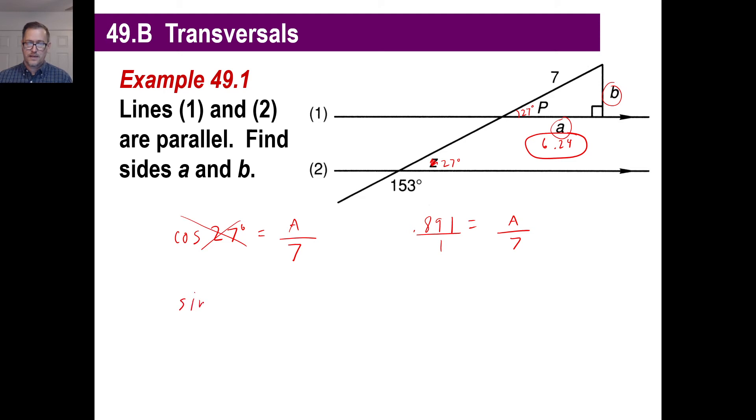So, we have sine of 27 is the opposite, which is B, over the hypotenuse. Well, again, no idea what the sine of 27 degrees is. Let's just pop it in here. 27 and then sine. I get 0.454 rounded up a little bit.